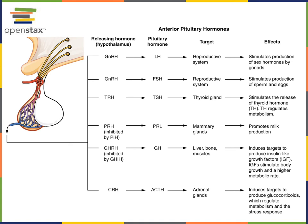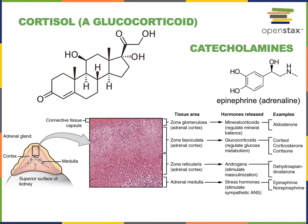Cortisol is a long-term stress response hormone that functions to increase blood glucose levels — hence the name glucocorticoid, produced by the adrenal cortex. A synonym for glucocorticoid is cortisol. The chemical structure of cortisol, the major glucocorticoid in humans, is a steroid hormone produced from cholesterol.